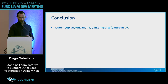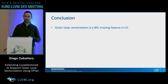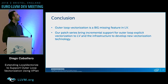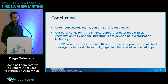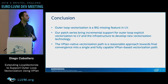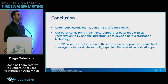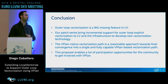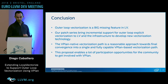The conclusions: outer loop vectorization is a big missing feature in loop vectorizer. We are introducing this patch series to bring incremental support for outer loops and all the infrastructure to build new vectorization technology. The vPlan native vectorization path is a reasonable approach that will help us move toward a single vPlan-based path with support for inner and outer loops — and most importantly, it enables the community to participate.